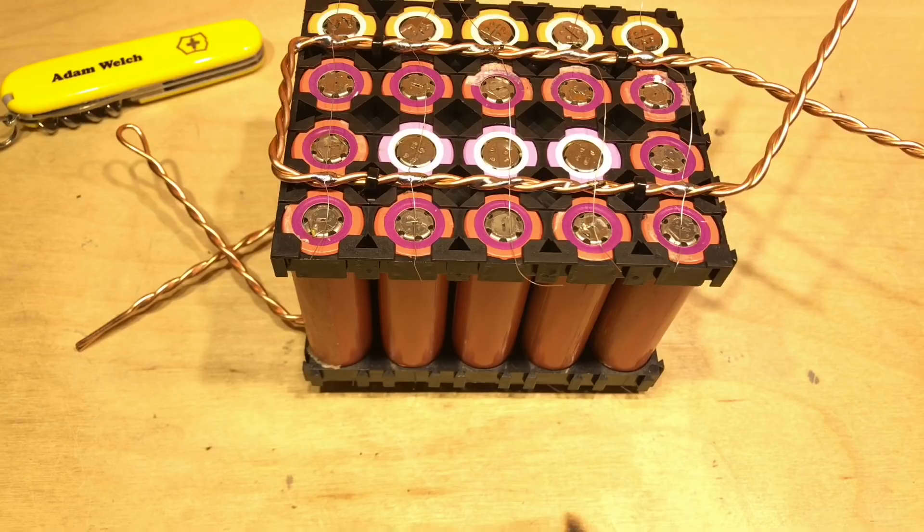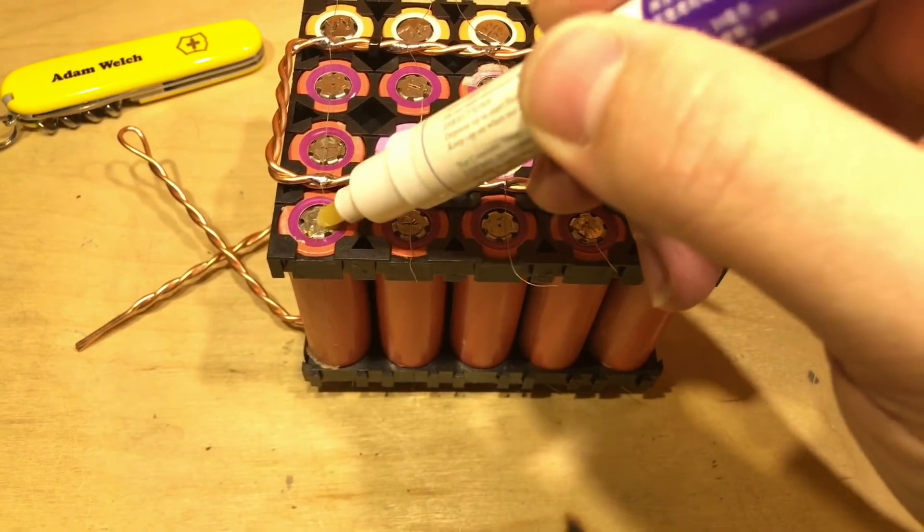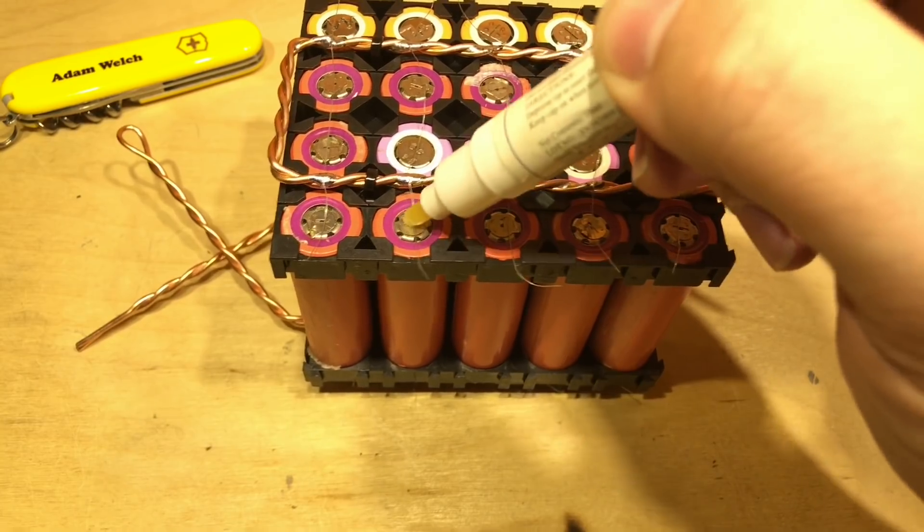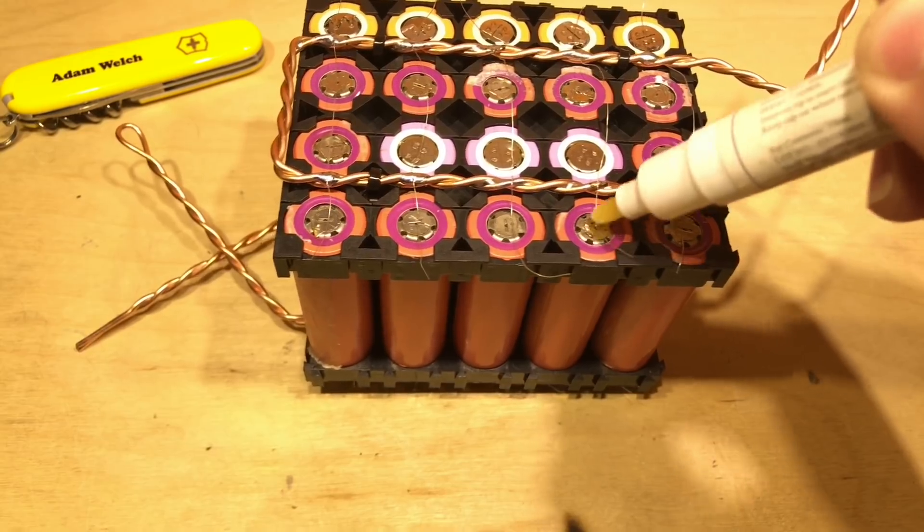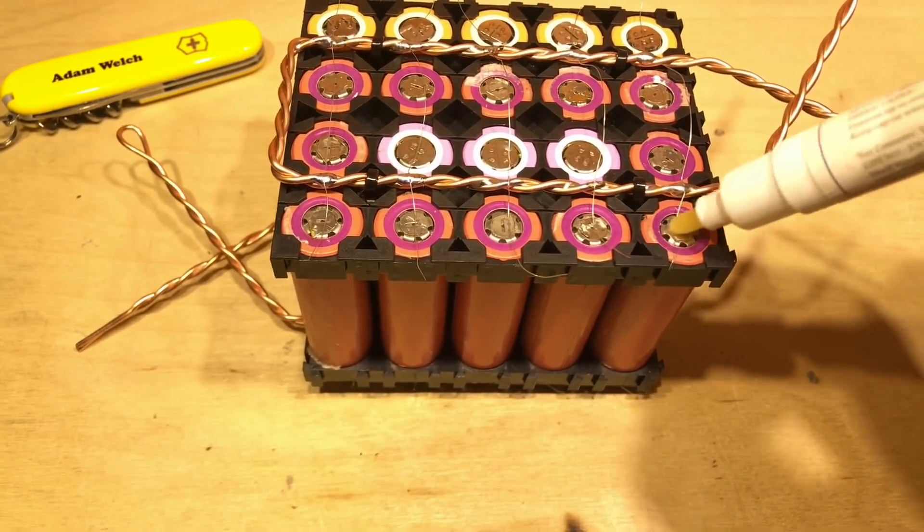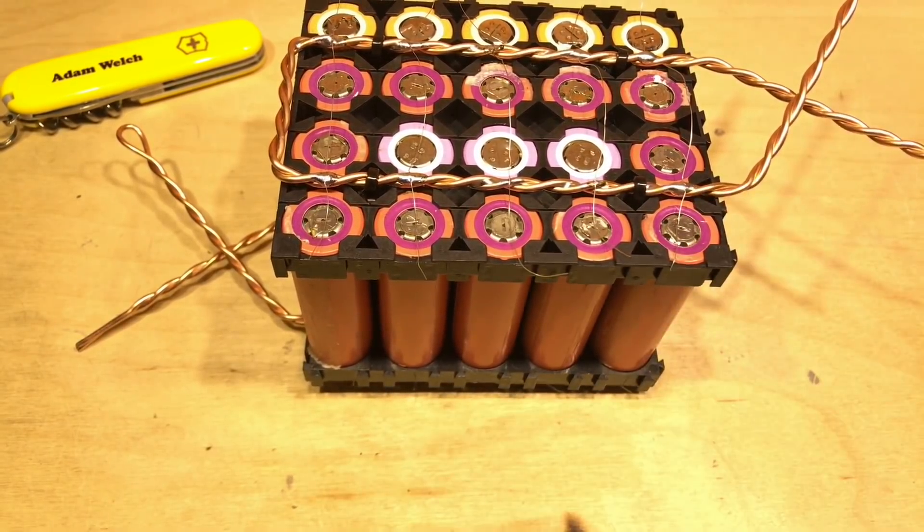But that shouldn't be a problem because all my cells are at the same voltage. Right before I solder this row of cells let's put a bit of flux here and I'm going to solder the wire to the cell all at the same time, no messing around with pre-tinning or anything this time.